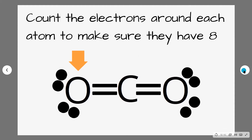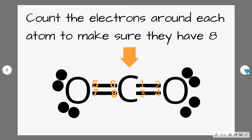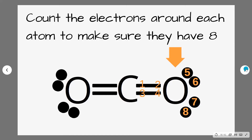Starting with oxygen, counting its electrons including the shared ones in each bond, it has eight electrons and is stable. Carbon also has eight electrons, so it's stable too. Finally, our second oxygen also has eight electrons. So all three atoms are stable, which gives us a pretty good indication that our Lewis diagram is correct.